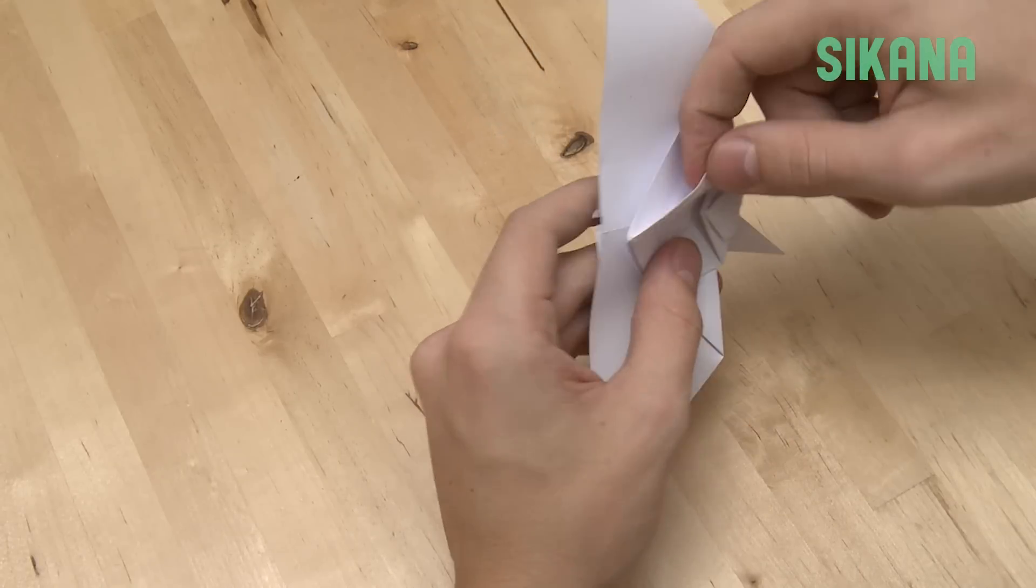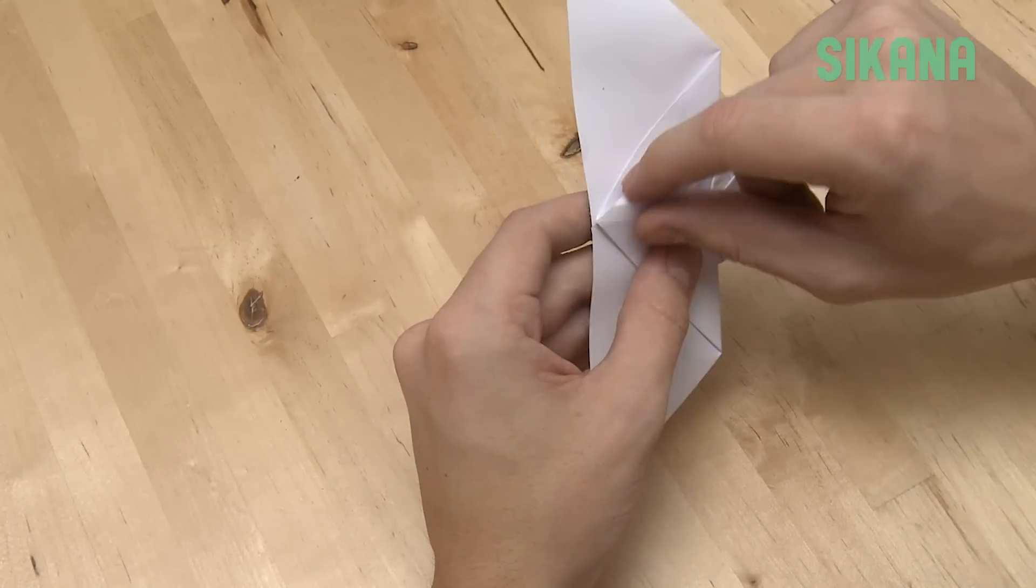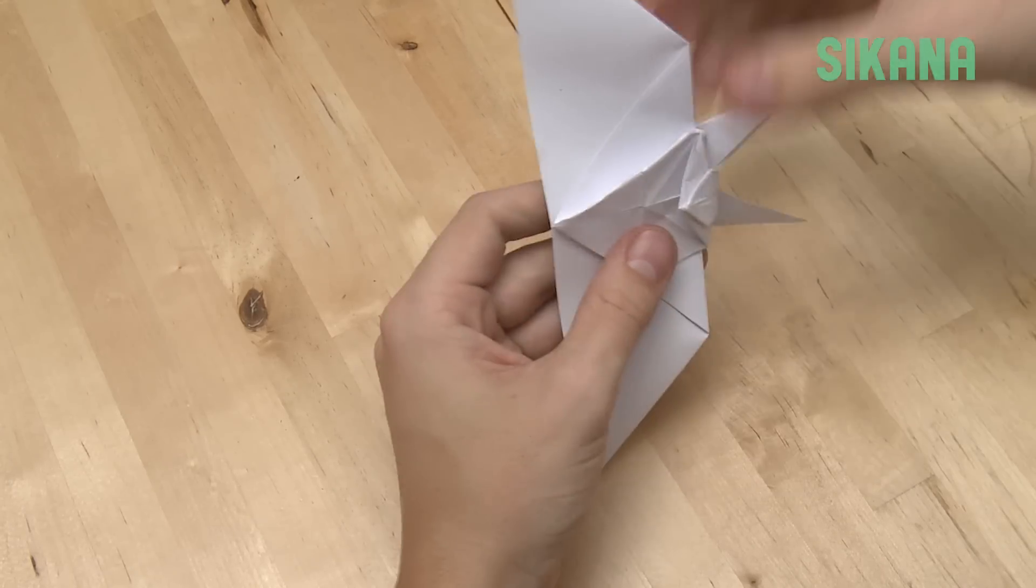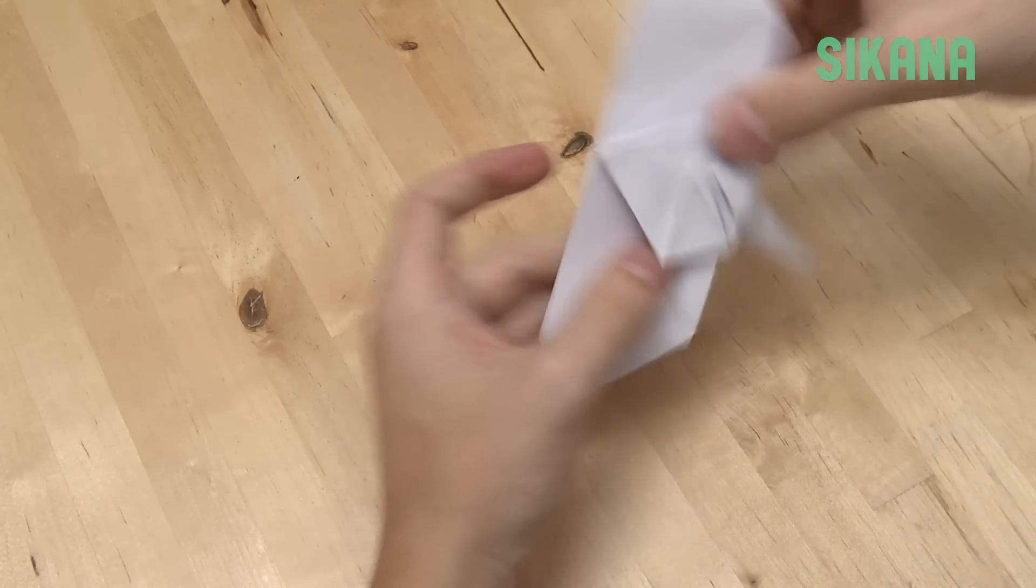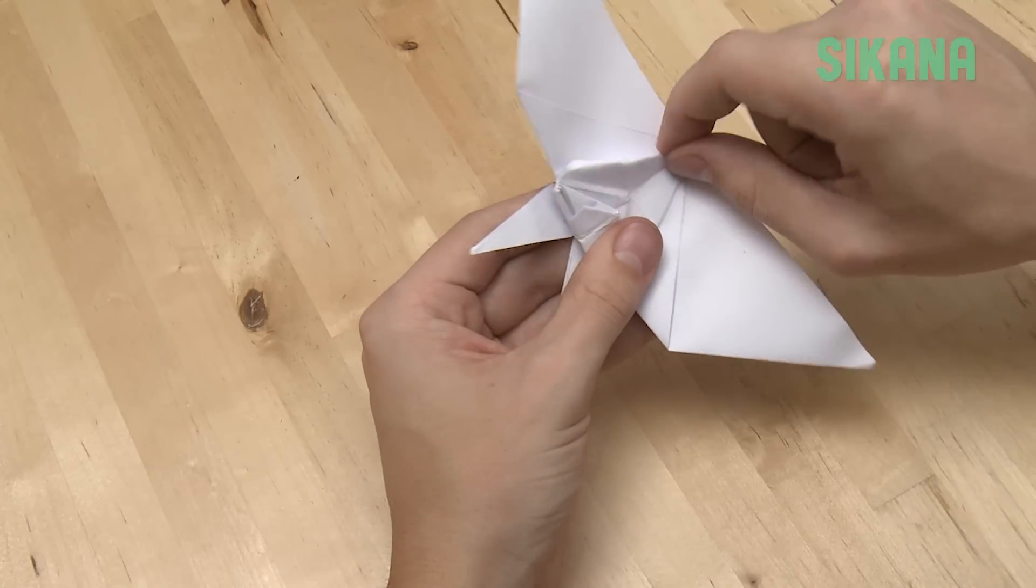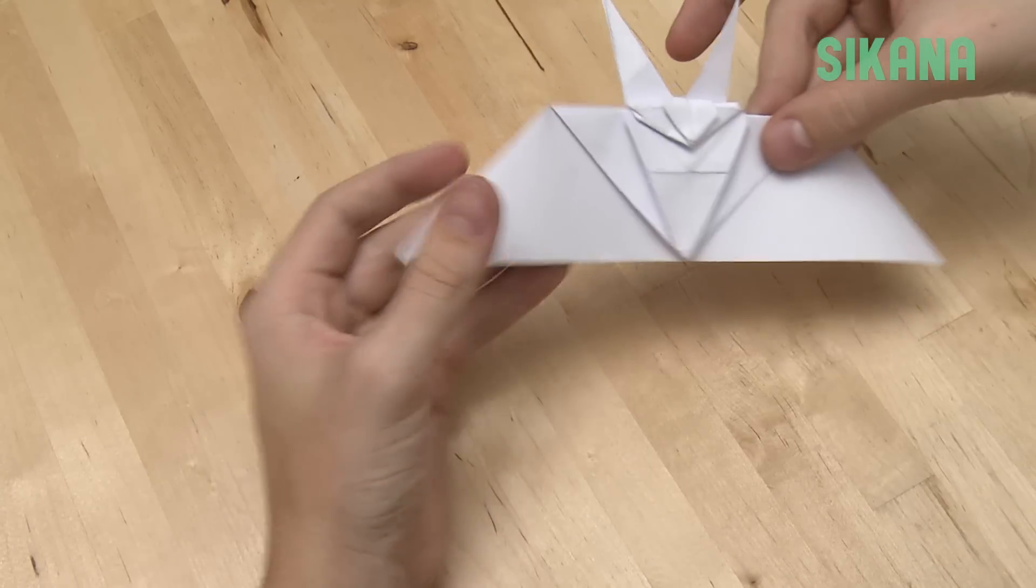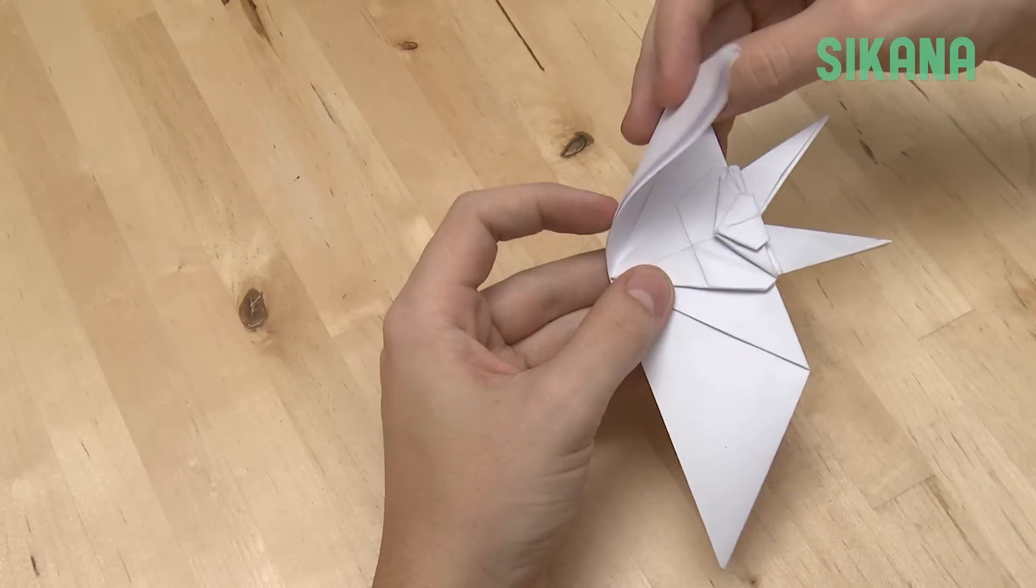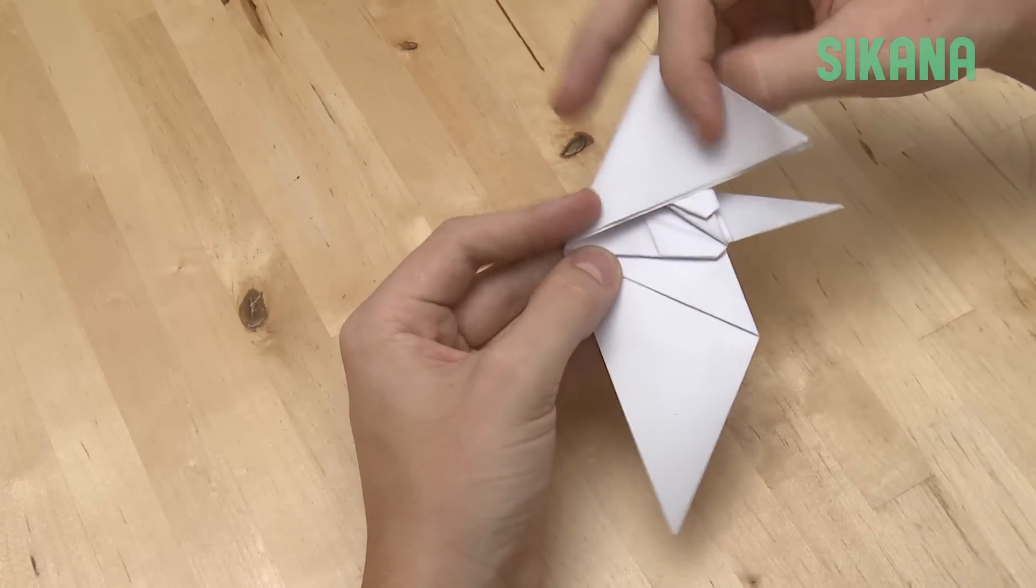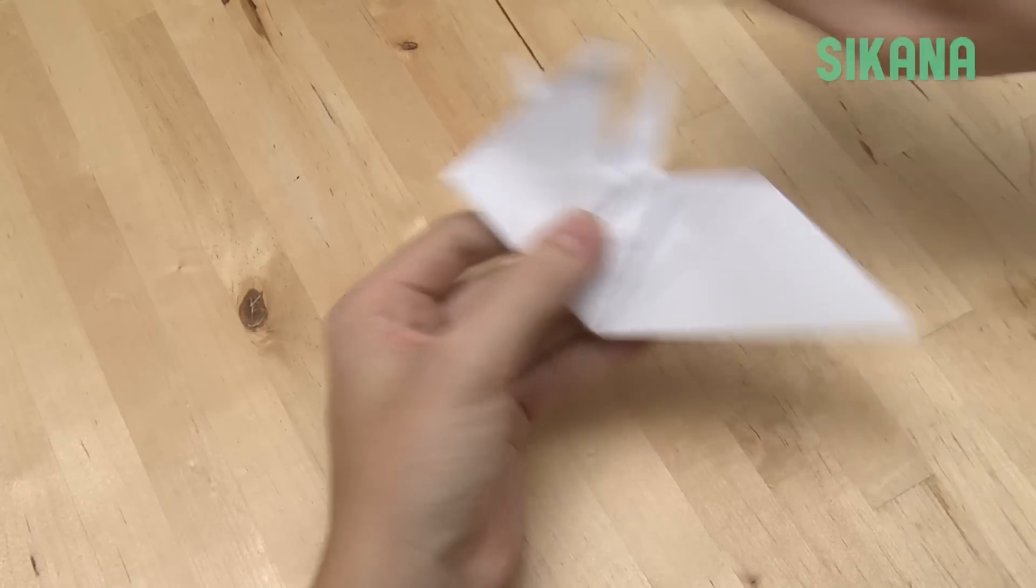Fold this part in to refine the body. Repeat for the other side. Now we make the wings. Fold the wing to the center line. Repeat for the other side.